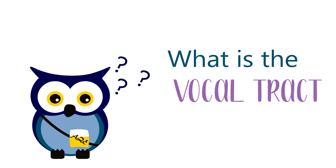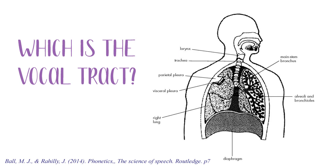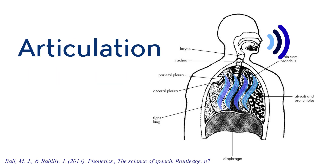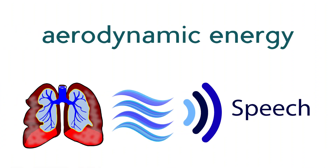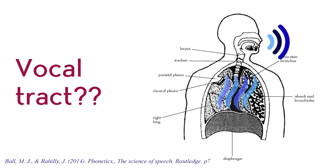What is the vocal tract? Here is a picture of the vocal tract. The lungs pump up the air, and what the vocal tract does is convert air into sound. So conversion of air into sound is articulation. Think of speech sounds as acoustic energy — we know that energy changes form. Here we have aerodynamic energy produced by the lungs, which is converted into acoustic energy by the vocal tract.